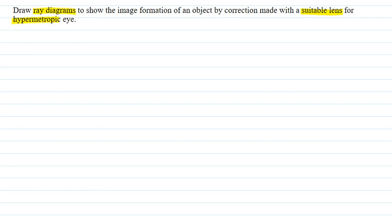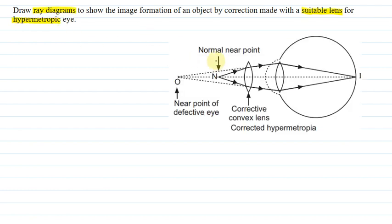So first let's create a ray diagram. So this is the ray diagram. Now let's see what is given. Given is defect of vision. And what is this defect? Hypermetropia.